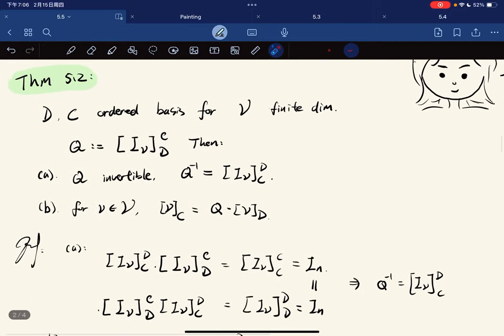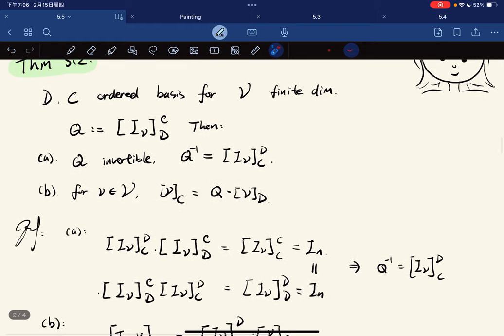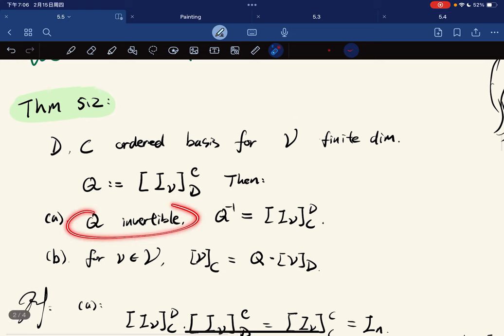Here's a theorem: for D, C ordered bases for V finite dimensional, we let Q denote the identity matrix with respect to these two ordered bases. Then we have Q is invertible.